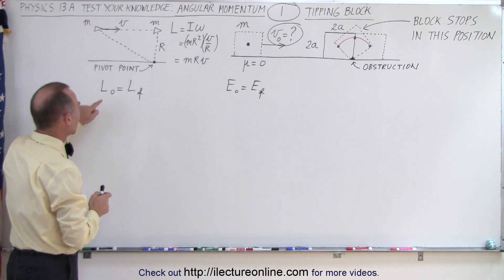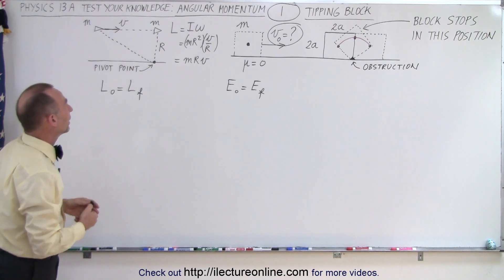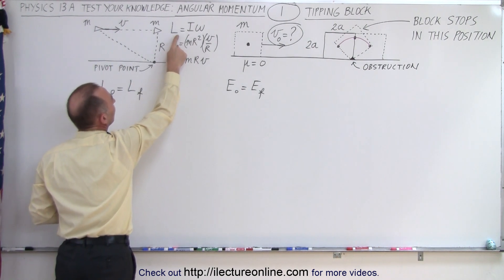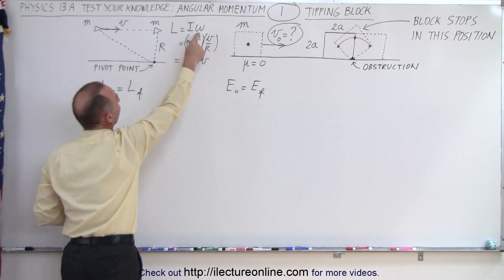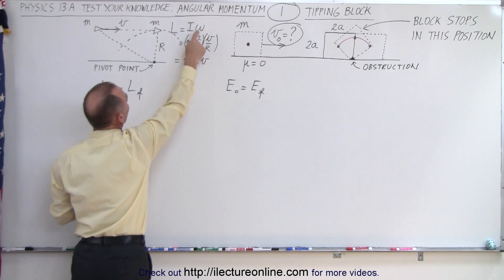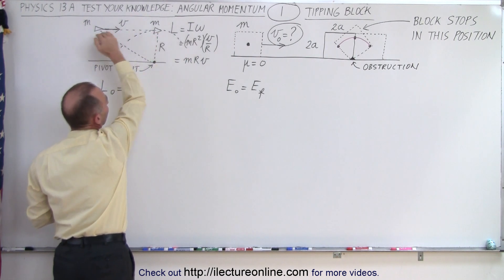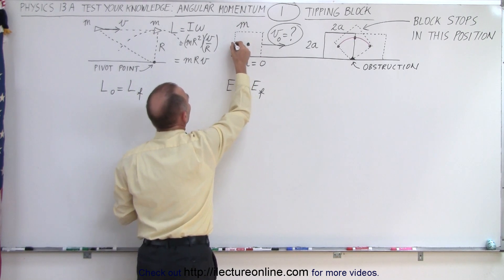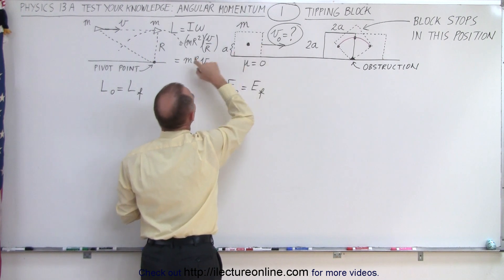What is the angular momentum of a block sliding along a linear path? It's the same as a bullet coming along a linear path with velocity v and mass m. The angular momentum can be calculated as the moment of inertia times omega. The moment of inertia in this position is mr², and the angular velocity is v over r. So the angular momentum of an object traveling in a linear path is mrv. For the block, the center of mass is at the middle, a distance a above the floor, so r equals a.